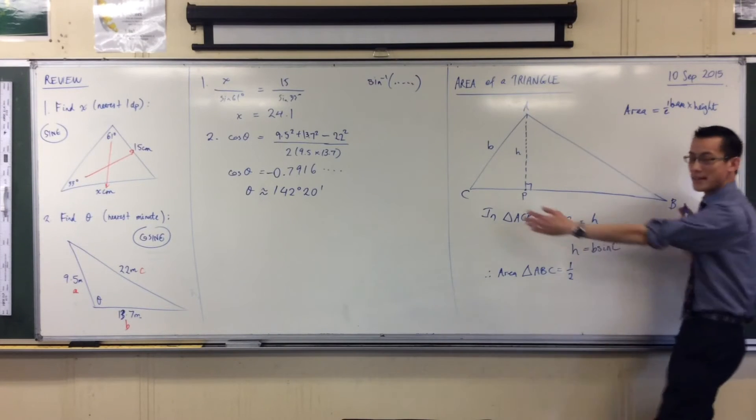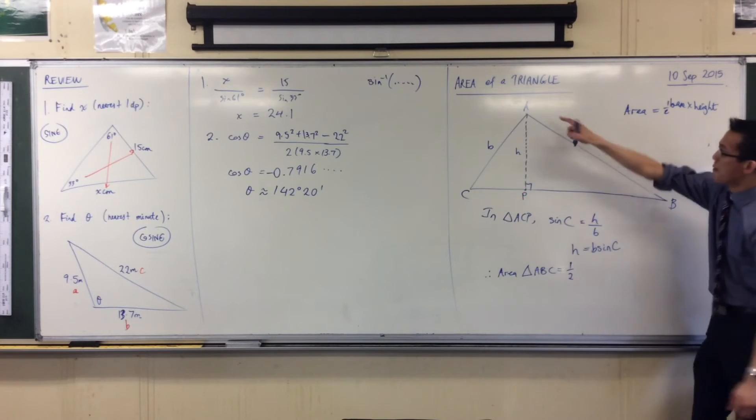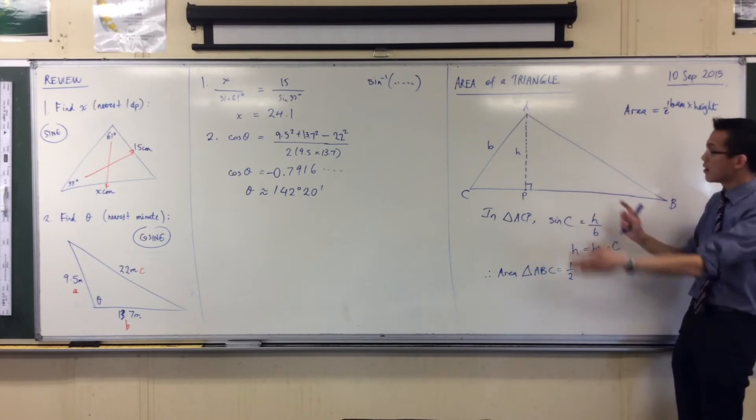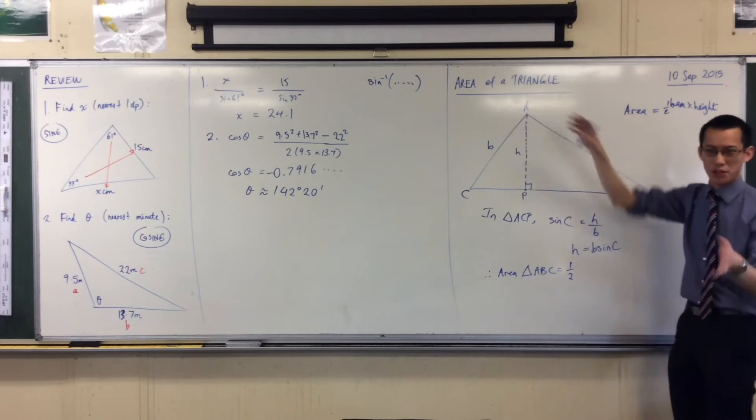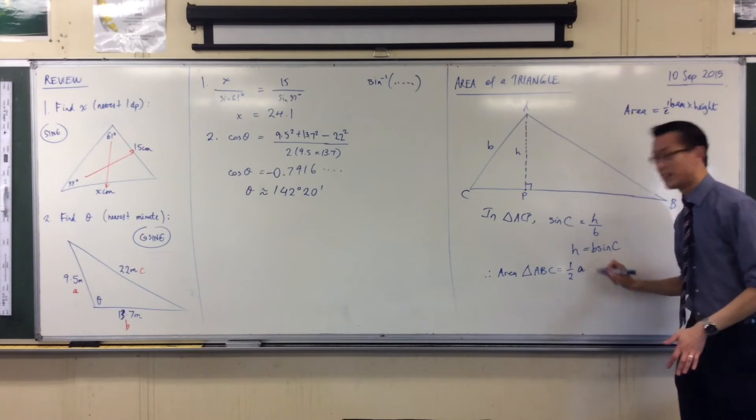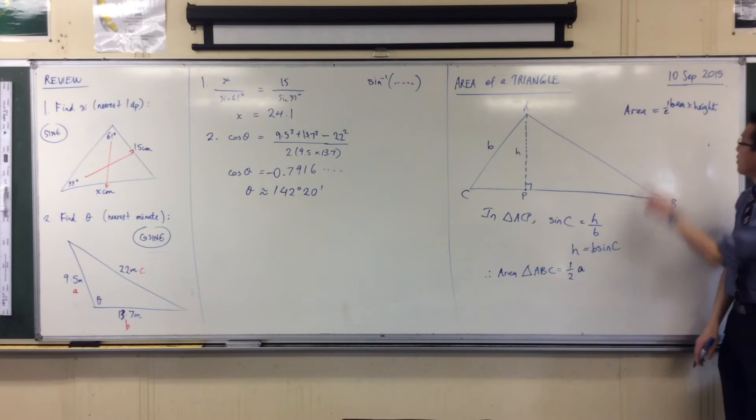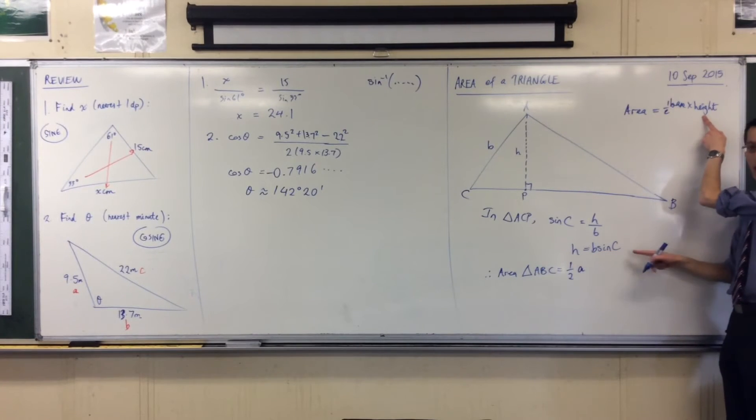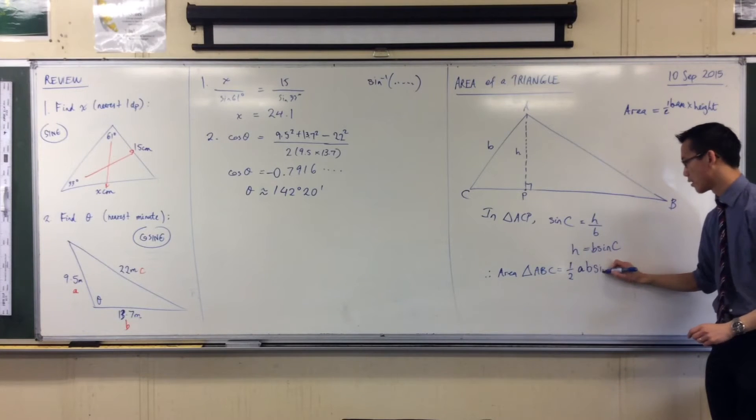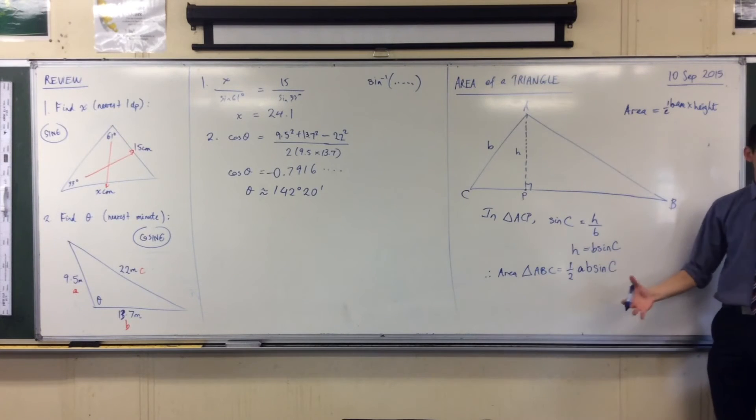Half, I'm calling the base this bottom length. Now, I can call it BC, or CB, but being that it's opposite capital A, I'm just going to try and be more concise and just call it little a. There's my base, and I just worked out what the height was. It's B sine C. And that's it.